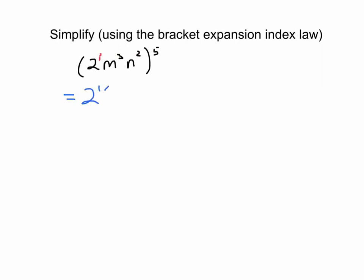So you get 2 to the power of 1 times 5 times m to the power of 3 times 5 times n to the power of 2 times 5, which gives you 2 to the power of 5, m to the power of 15, n to the power of 10. And because we're asking you to simplify, usually we simplify the numbers down. 2 to the power of 5 is actually 32, and that will probably be the biggest power I would be expecting you to evaluate without a calculator.